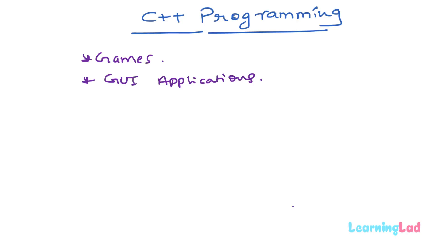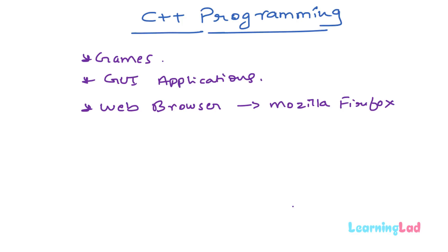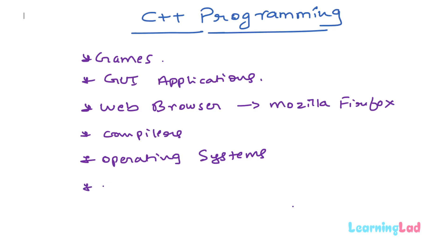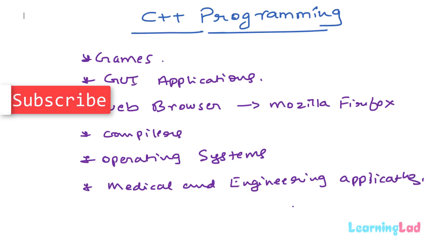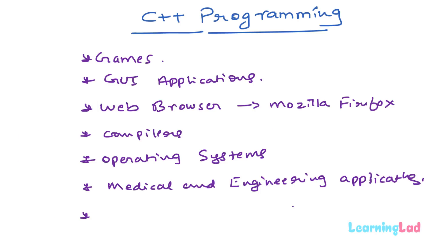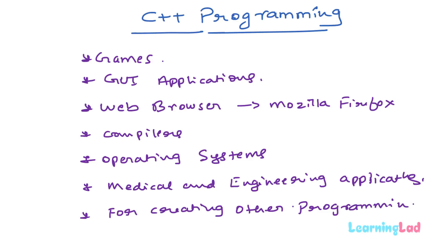C++ is also used in image editing software like Adobe Photoshop, Adobe Illustrator, and ImageReady. It is used for creating web browsers — for example, Mozilla Firefox has most of its code written in C++. C++ is also used for creating compilers, and for writing major parts of operating systems like macOS and Windows. It is used in medical and engineering applications, including simulation software. Another area where C++ is widely used is for creating other programming languages — for example, Java is written using C++.